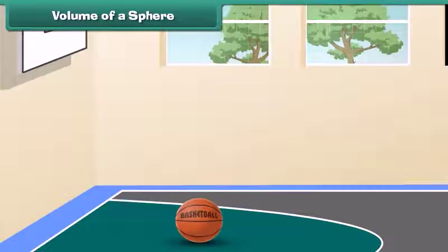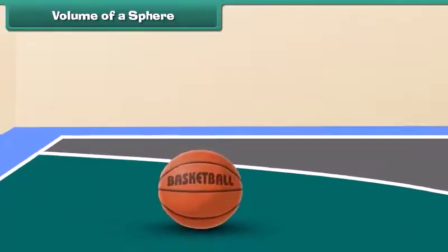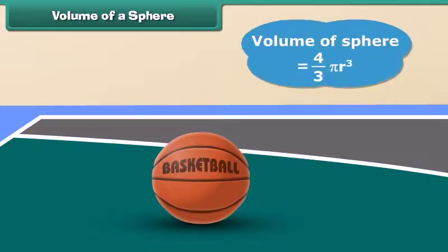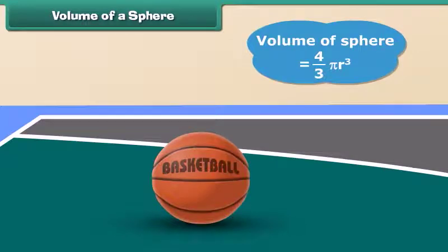What do we call this round ball? Yes, it's a sphere. It looks same from every angle, isn't it? The formula to find the volume of this sphere, V is 4 over 3 pi R cube.